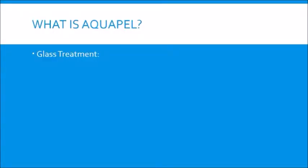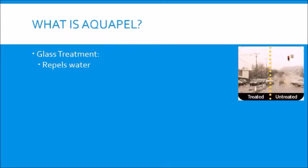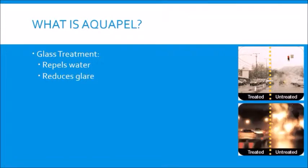Aquapel is a specialty chemical that belongs to a class of products that treat the surface of glass with a hydrophobic layer. It is primarily used in automobiles on windshields to repel water and reduce glare in rainy weather, so as to improve the driver's vision on the road.